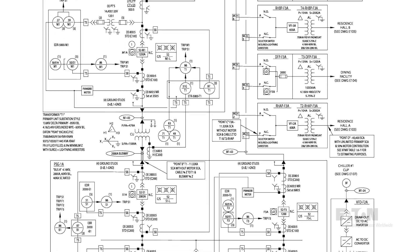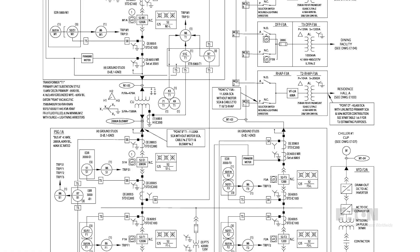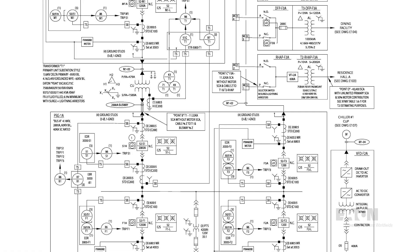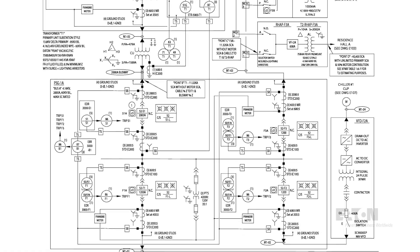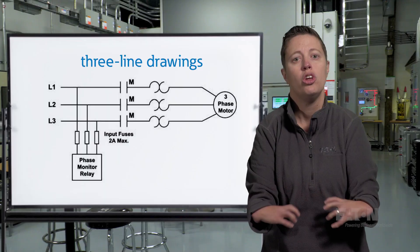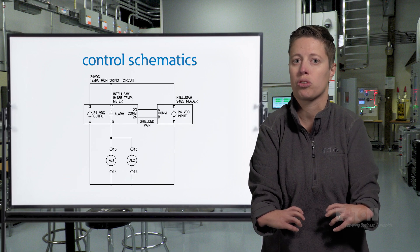Each piece of equipment or component is represented by a specific symbol or abbreviation with lines drawn between them to represent the conductors connecting the equipment together. This is one of many types of electrical drawings associated with power systems. You may also hear about three line drawings, elevations, or control schematics.